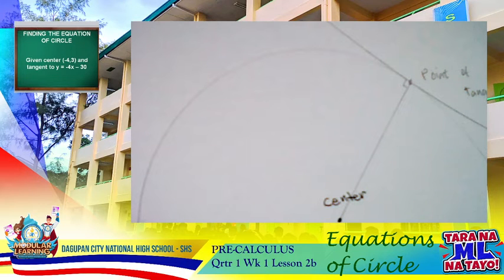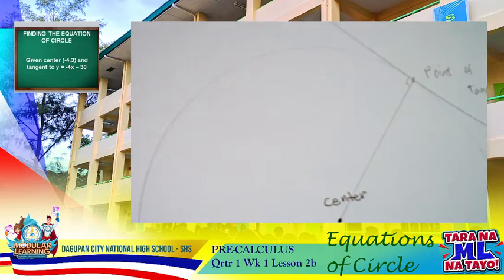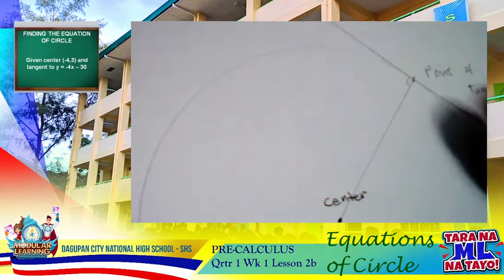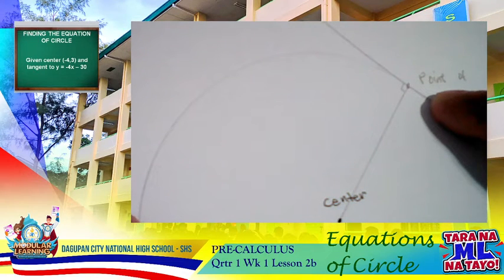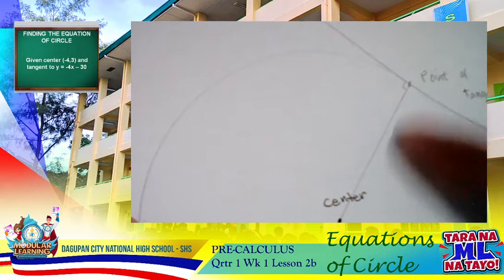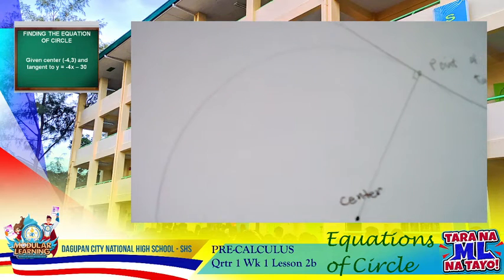The relationship of the center to the point of tangency is that the line from the center to the point of tangency is perpendicular to the tangent line. From that, we solve the point of tangency using either the substitution method or the elimination method. But first, let us identify the equation of the perpendicular line.